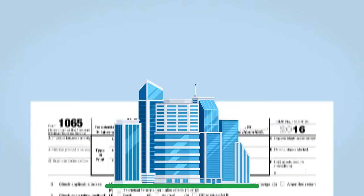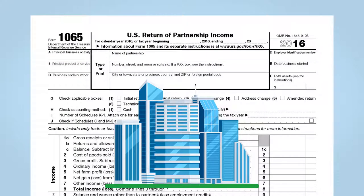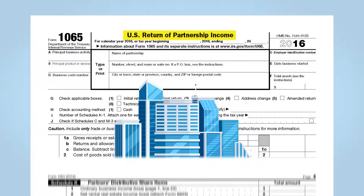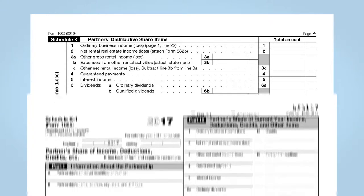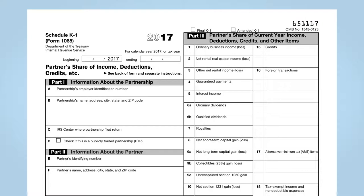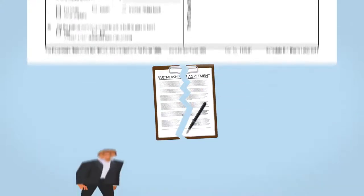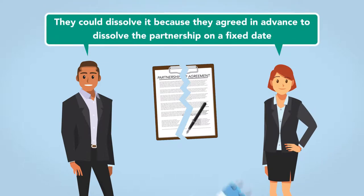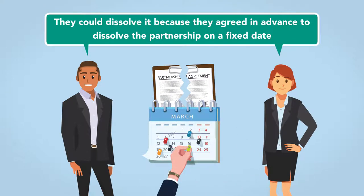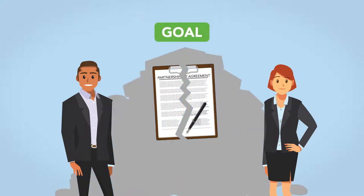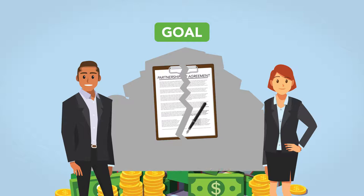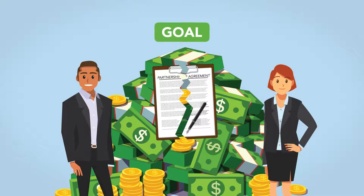The partnership is required to complete and submit a Form 1065, which is a partnership income tax return. The partnership reports the income allocated to each partner on Schedule K and then distributes a Schedule K-1 to each partner, advising of the amount of income allocated to that partner. Partners may terminate a general partnership for many potential reasons — they could dissolve it because they agreed in advance to dissolve on a fixed date, or if the partnership achieves its goals.